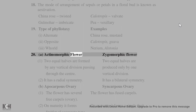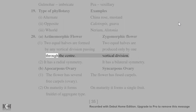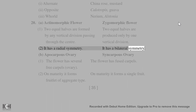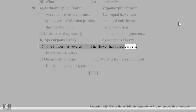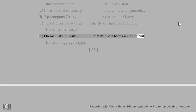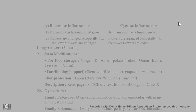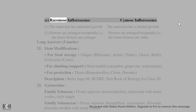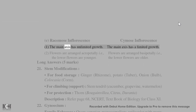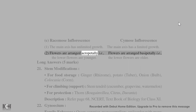20. A. Actinomorphic flower: two equal halves are formed by any vertical division passing through the center (radial symmetry). Zygomorphic flower: two equal halves produced only by one vertical division (bilateral symmetry). B. Apocarpous ovary: the flower has several free carpels; on maturity it forms fruitlets of aggregate type. Syncarpous ovary: the flower has fused carpels; on maturity it forms a single fruit. C. Racemose inflorescence: the main axis has unlimited growth; flowers are arranged acropetally (lower flowers are older). Cymose inflorescence: the main axis has limited growth; flowers are arranged basipetally (lower flowers are younger).